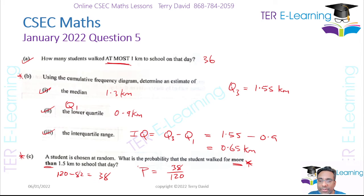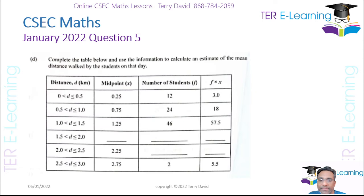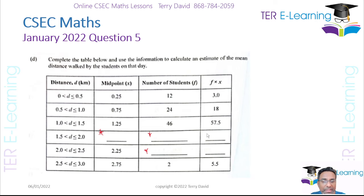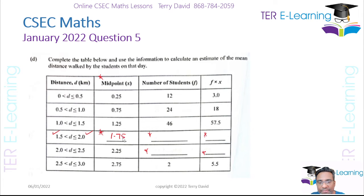The last part gives us a table — complete it and use the information to calculate an estimate of the mean. We're missing some data. First, find the midpoint for the 1.5 to 2 class: add 1.5 and 2 then divide by 2, giving 1.75. So 1.75 goes into the midpoint column.